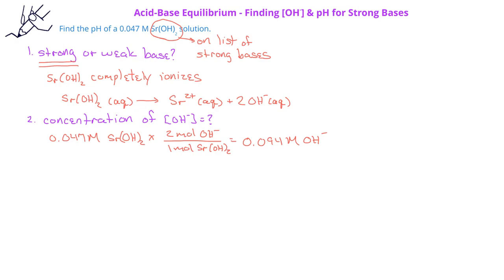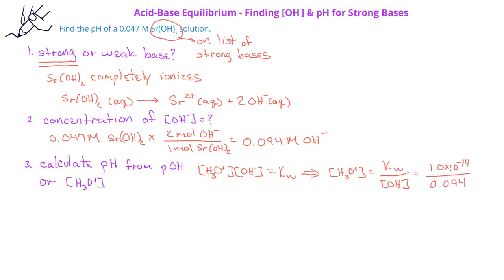Now that we have the concentration of the hydroxide ion, we can find the pH of the solution. This can be done in a few different ways. First, we could find the hydronium ion concentration based on the relationship between Kw, the hydroxide ion, and the hydronium ion. We know that the hydronium ion concentration is equal to Kw divided by the hydroxide ion concentration, which is 1.0 times 10 to the minus 14 divided by 0.094, which gives us a hydronium ion concentration of 1.1 times 10 to the minus 13 molar.